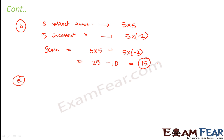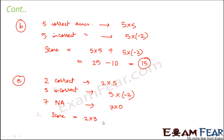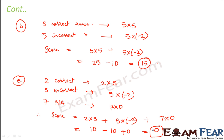In the third case, Hina gave 2 correct answers, 5 incorrect, and 7 not attempted. For 2 correct answers the score is 2 into 5. For 5 incorrect answers the score is 5 into minus 2. For 7 questions not attempted the score is 7 into 0. Therefore the total score is 2 into 5 plus 5 into minus 2 plus 7 into 0, which is 10 minus 10 plus 0, equal to 0. So the net score of Hina is 0.